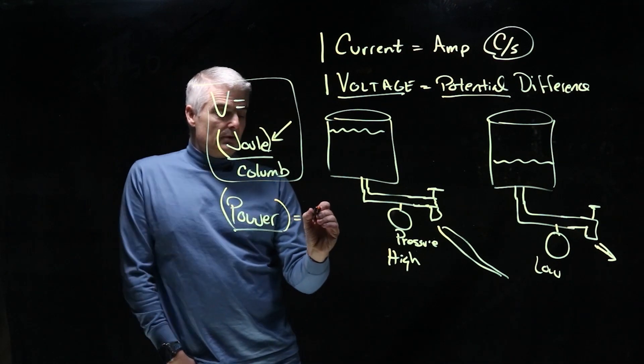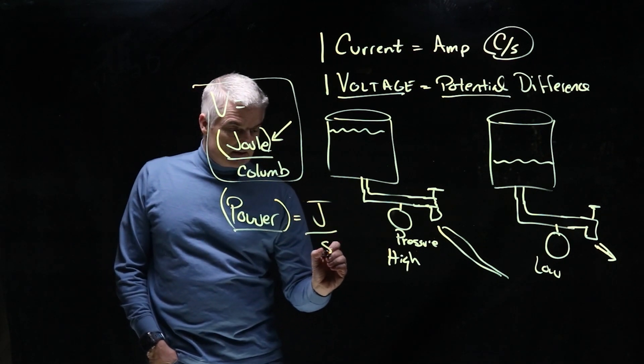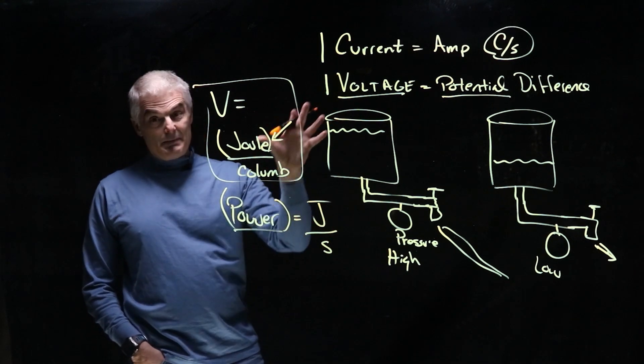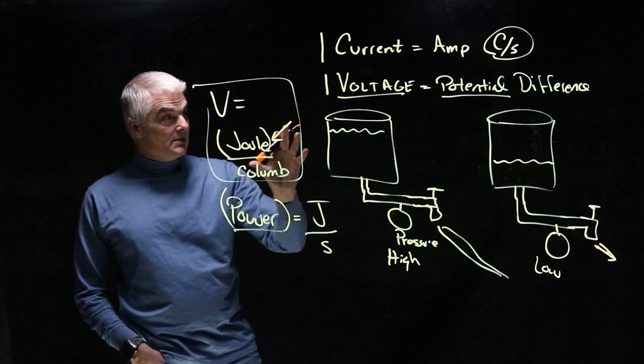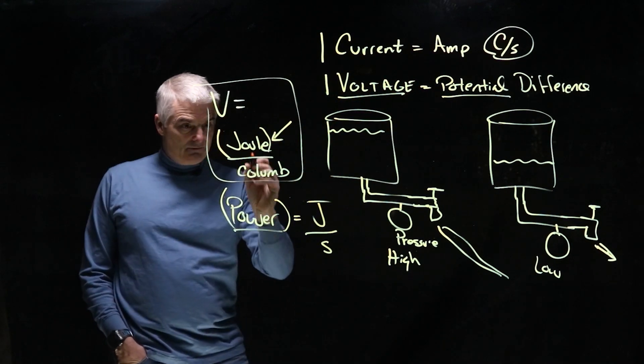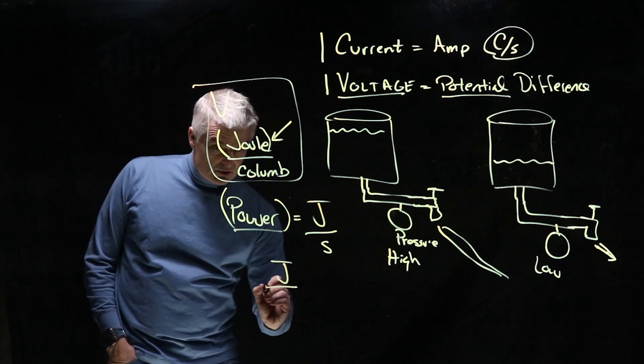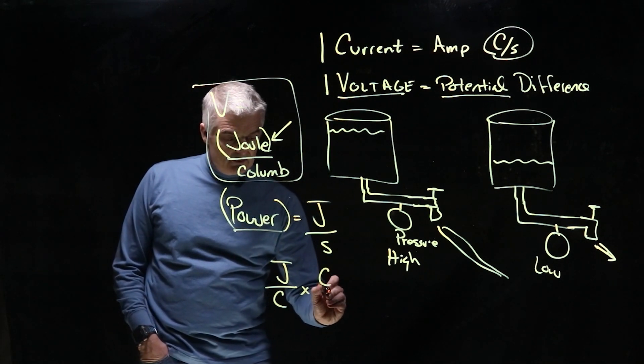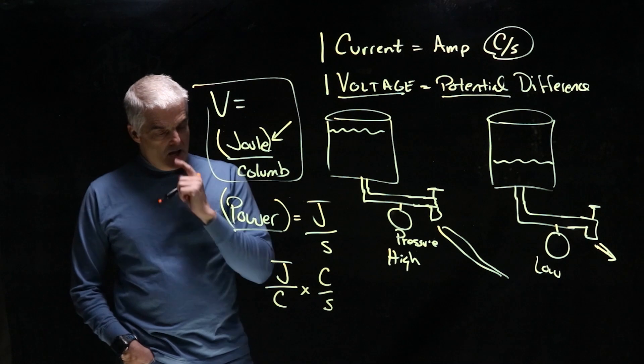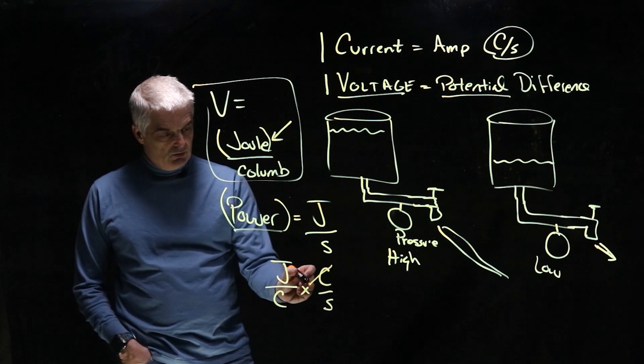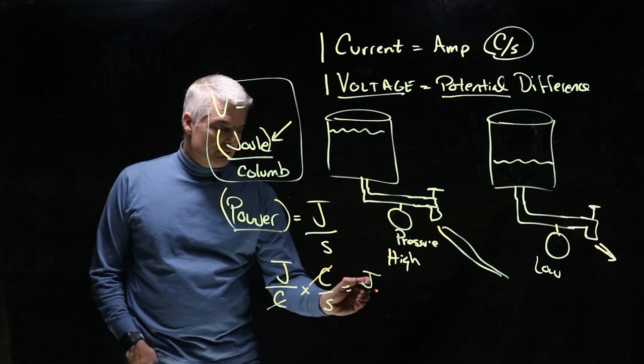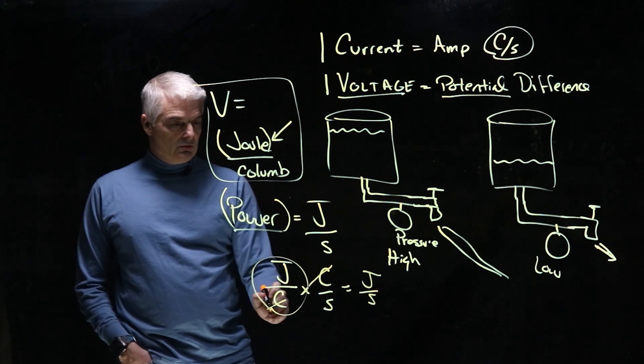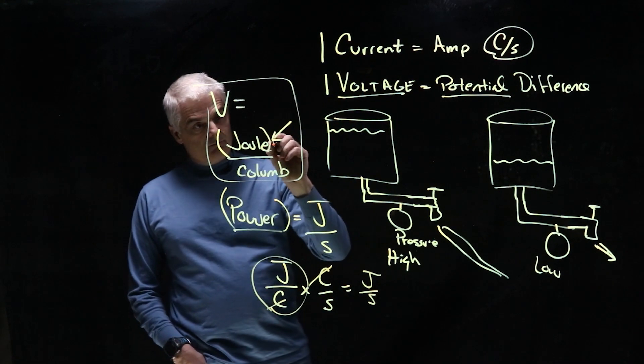But power is, if you will, the amount of work you can do in a second. How much work, meaning how much energy can be produced, and energy is joules per second. Now here's the thing about electricity that we can put this together. If you look at voltage, voltage is a joule per coulomb, and then we times it by an amp, which is a coulomb per second. Let's think about this. What happens mathematically? The coulombs cancel, and you end up with a joule per second. So joule per coulomb is a volt.